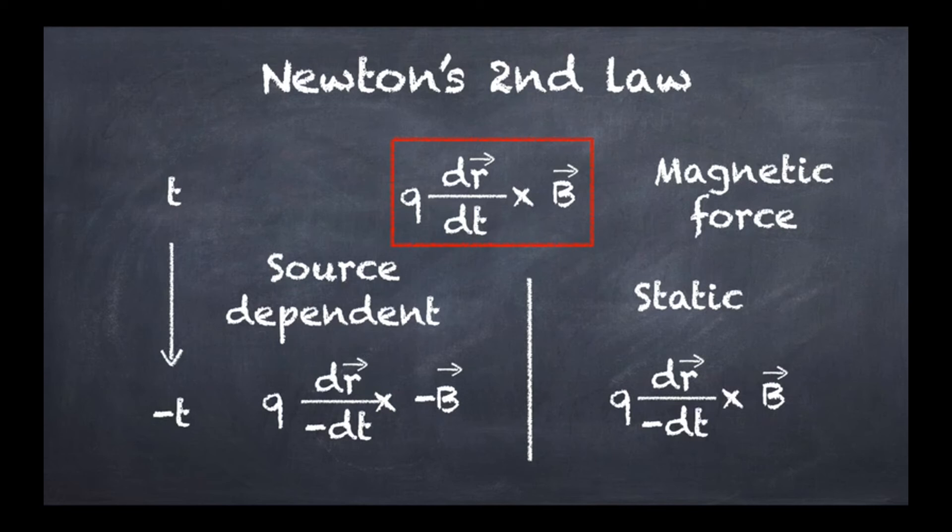You see that in the case where you put all the minus signs together, you get on the left-hand side the very same expression you started with, and on the right-hand side there's a minus sign, so it's not the same expression. We're in a paradoxical situation where this particular force is at the same time reversible and not reversible, depending on the strategy you use.